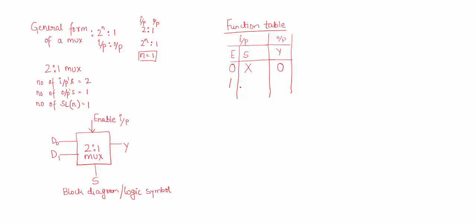When enable is 1 and the select line is 0, d0 gets connected to y, so the output is d0. If enable is 1 and select line is 1, then d1 is connected to y, so the output is d1. This is your function table of the 2-to-1 MUX. Let us now write the truth table.